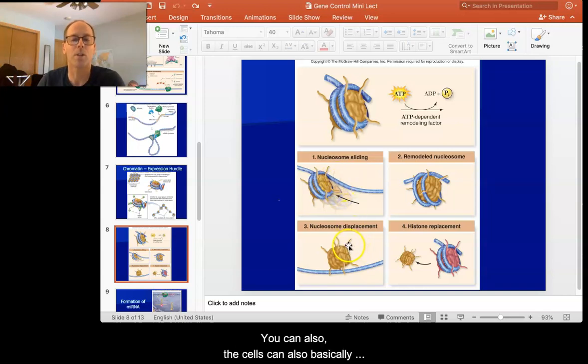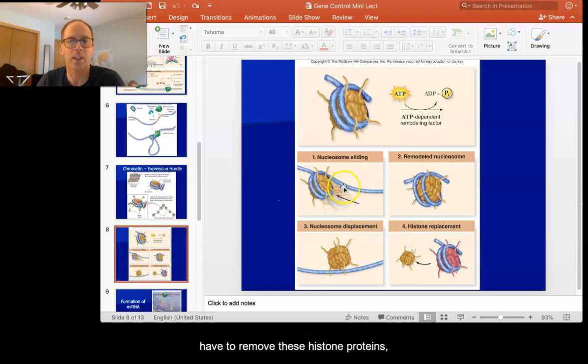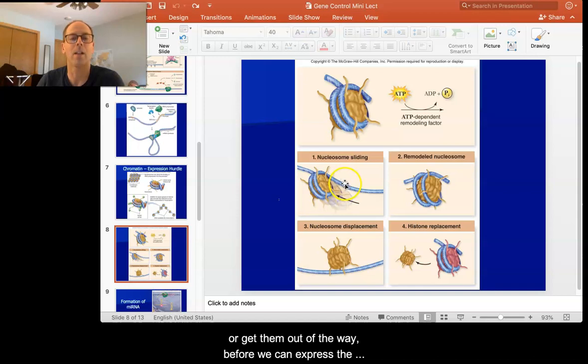You can also, the cells can also basically remodel or remove this protein. So we can change the shape of this protein, we can remove the protein, or we can displace it and then replace it with another protein. So in any of these cases, we have to remove these histone proteins or get them out of the way before we can express the genes in eukaryotic cells. So this is sort of a barrier to transcription.